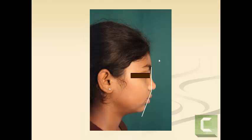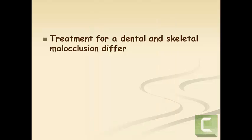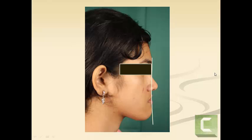In another type of case, the patient has a convex profile — this is a class 2 case with a skeletal class 2 malocclusion as well. This distinction is important because treatment for a dental and skeletal malocclusion can differ — in fact, they are sometimes totally opposite. So it is very important to determine whether a malocclusion is only dental, only skeletal, or a combination, and in the case of skeletal, where exactly the problem lies.